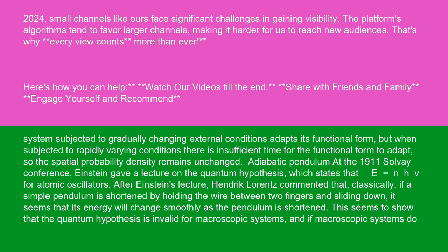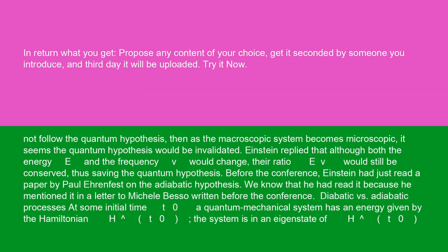At the 1911 Solvay Conference, Einstein gave a lecture on the quantum hypothesis, which states that E equals Nh-nu for atomic oscillators. After Einstein's lecture, Hendrik Lorentz commented that classically, if a simple pendulum is shortened by holding the wire between two fingers and sliding down, it seems that its energy will change smoothly as the pendulum is shortened. This seems to show that the quantum hypothesis is invalid for macroscopic systems. Einstein replied that although both the energy E and the frequency nu would change, their ratio E/nu would still be conserved, thus saving the quantum hypothesis.